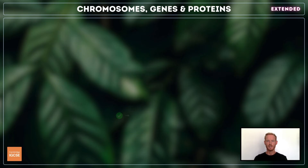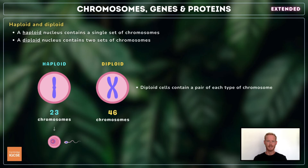Finally, you need to describe the terms haploid and diploid. A haploid nucleus is a nucleus containing a single set of chromosomes, while a diploid nucleus contains a pair of each type of chromosome. In humans, haploid cells — that is, the gametes — contain 23 individual chromosomes, while diploid cells contain 23 pairs.